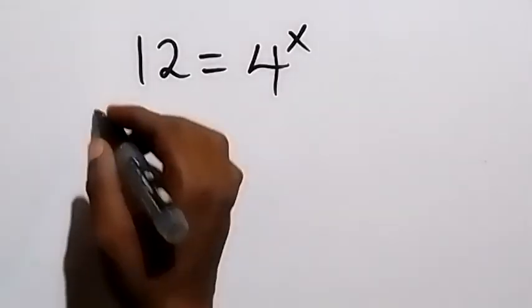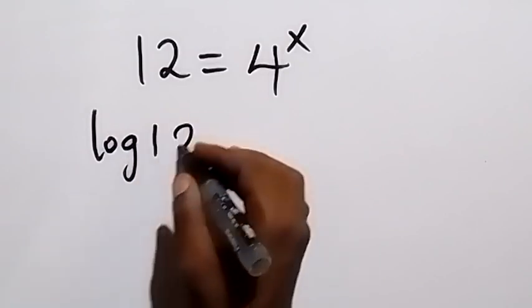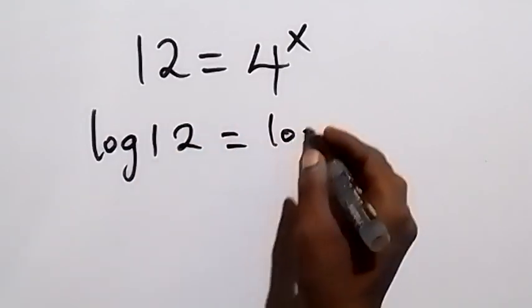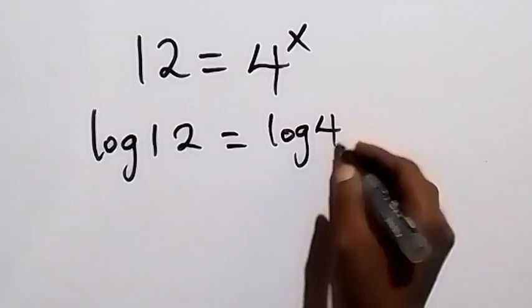From here, let's take the log on both sides. So here we have log 12 equals to log 4 raised to power x.